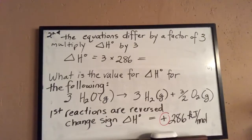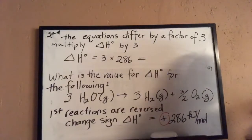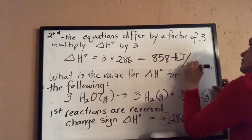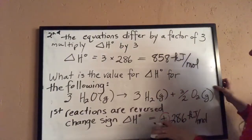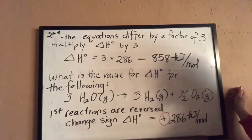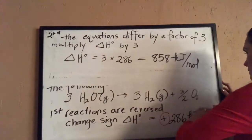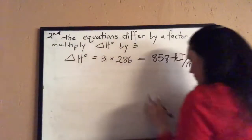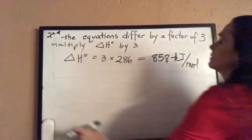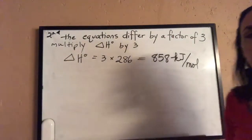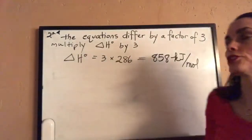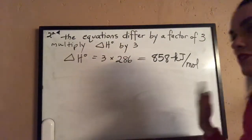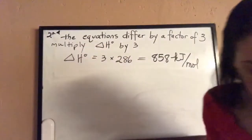Multiplying 286 by three, we get 858 kilojoules per mole. That's example one, which showed the steps of reversing the sign of the heat and multiplying the coefficients by a factor. You may have to divide or multiply depending on the relationship.